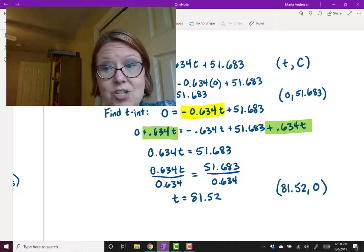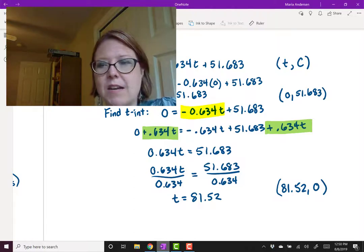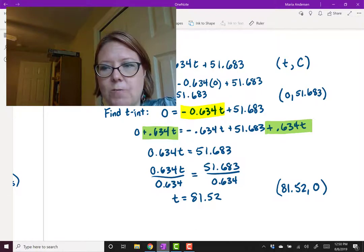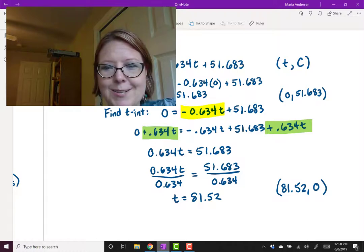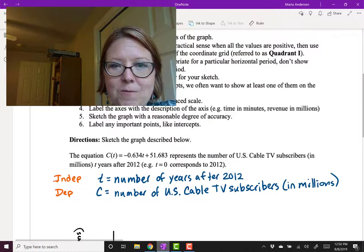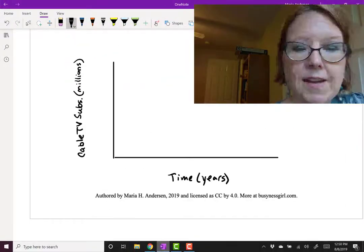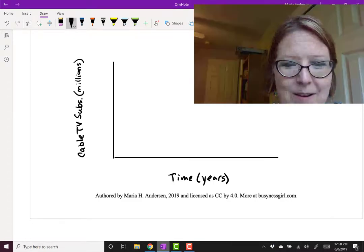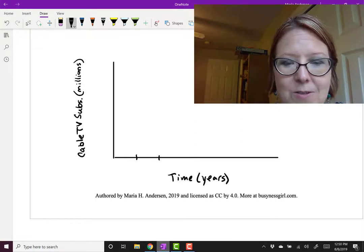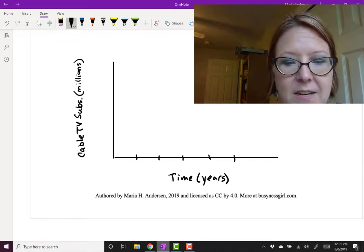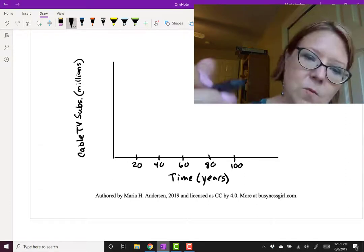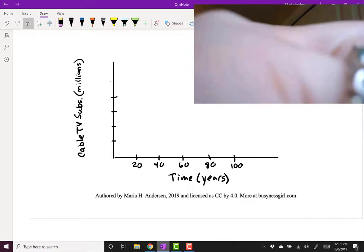Now we have the two intercepts and they're both below 100. We have 51.68 on the y-axis and 81.52 on the x-axis. Let's use that to count both axes from 0 to 100. Moving back to our graph, I'll count by 20s on the horizontal axis, evenly spaced: 20, 40, 60, 80, 100. And on the y-axis I'll do the same: 20, 40, 60, 80, 100.